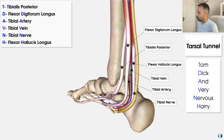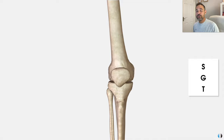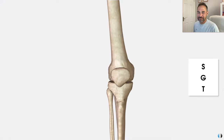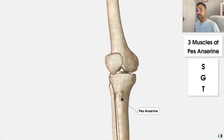So there you go. It's really important to know these different structures, because when it comes to conditions such as tarsal tunnel syndrome, we want to work out if it is indeed the tibial nerve which is impacted and causing our patient's symptoms. So let's dive into the knee. The first mnemonic is SGT — sometimes used to abbreviate the word sergeant — to help remember the three key muscles that insert into the pes anserine region, located on the proximal medial side of the tibia.